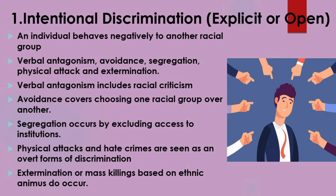Avoidance covers choosing one's own racial group over interaction with another racial group. Avoiding another person because of race can be more damaging than direct abuse. People practicing this discrimination self-segregate and it can lead to long-term exclusion. Segregation occurs when a certain racial group is excluded from access to institutions — they cannot choose to study at the institution they wish. The most common examples include denial of equal education, housing, employment, and health care on the basis of race.